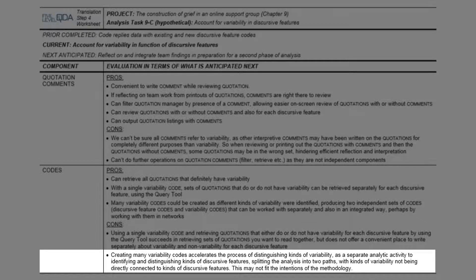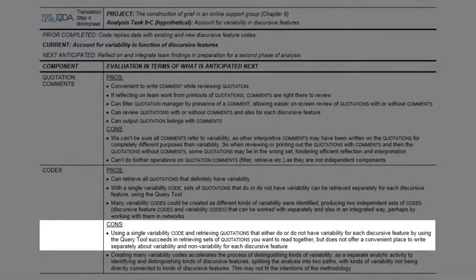One disadvantage of using a single variability code to tag quotations is that there is not a convenient place to write separate notes or interpretations about the quotations with or without variability, which might explain why Trina decided to conduct all this writing activity in Word.